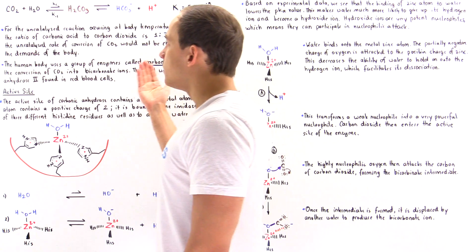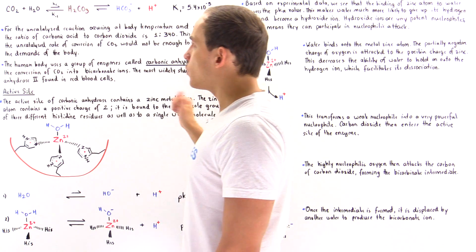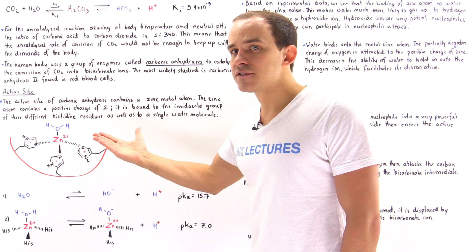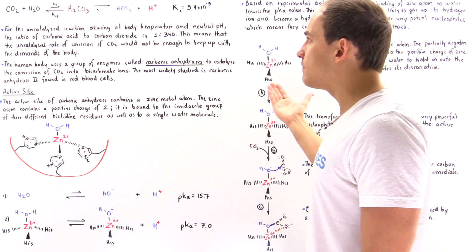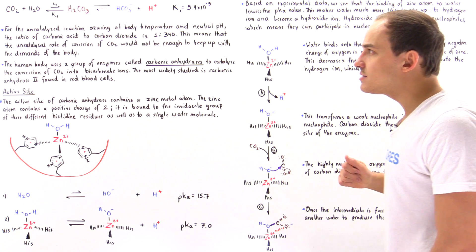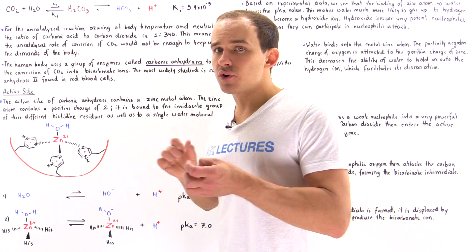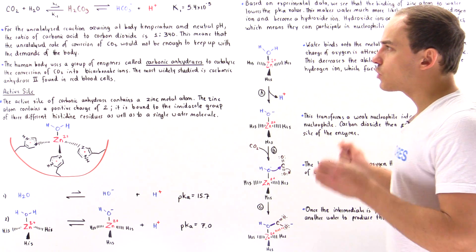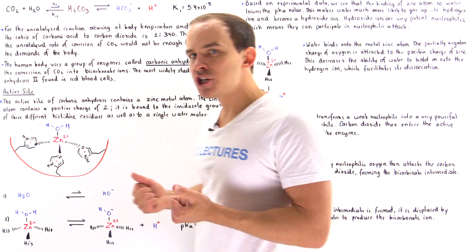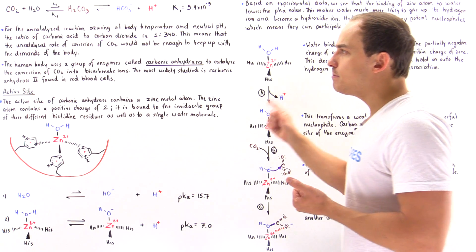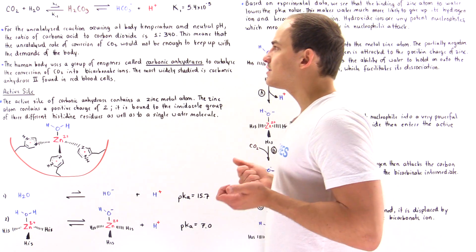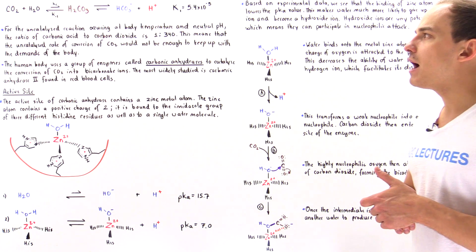The problem with this reaction is that if we study its rate in uncatalyzed form at a pH of 7 and body temperature of 37 degrees Celsius, we'll see that the rate is nowhere close to what it should be to actually meet the demands of all the trillions of metabolizing cells found inside our body.